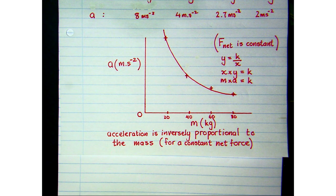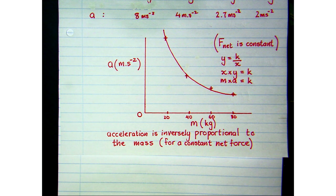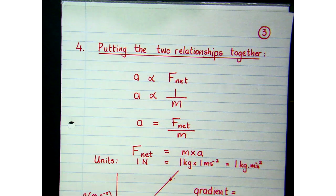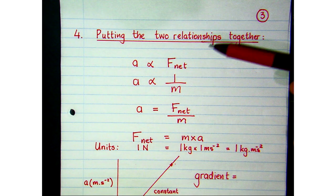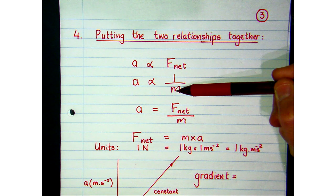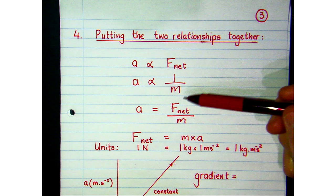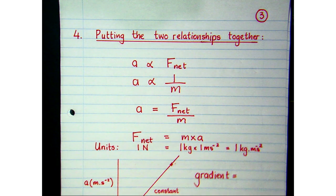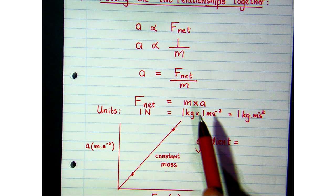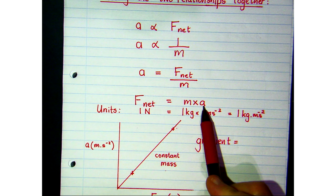A graph of acceleration versus mass gives a hyperbola, and the product of each data point is constant. Combining the two relationships — acceleration directly proportional to net force, and inversely proportional to mass — gives the equation: acceleration = F_net / mass, which rearranges to F_net = mass × acceleration. That is how you'll see it on your data sheet.